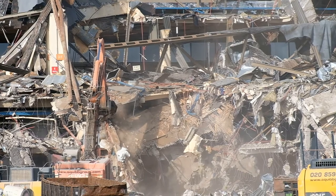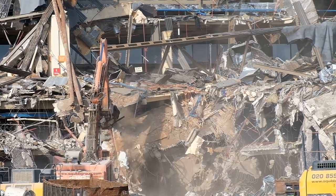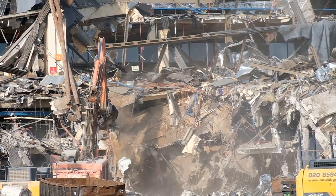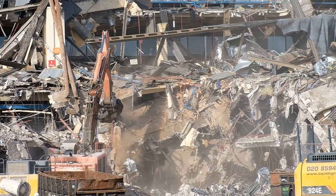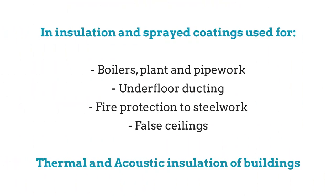The asbestos removal industry estimates that over 3,000 products contain asbestos. It can be found in insulation and sprayed coatings used for boilers, plant and pipework — some are obvious, but some are hidden in underfloor ducting. It is also used in fire protection to steelwork, often hidden behind false ceilings.